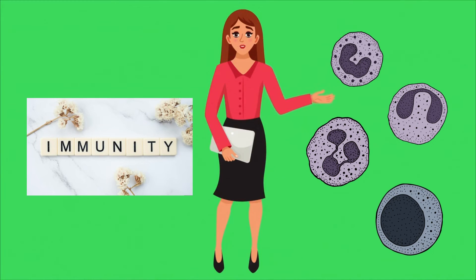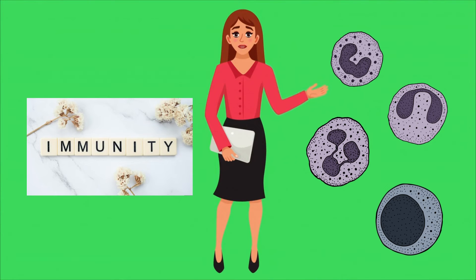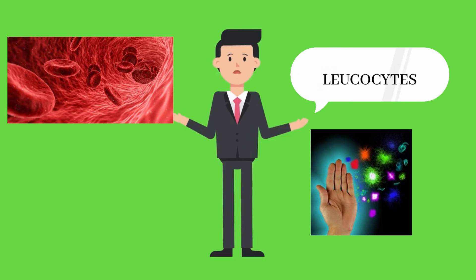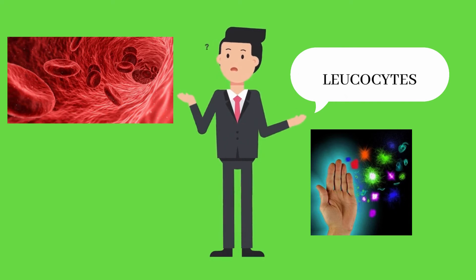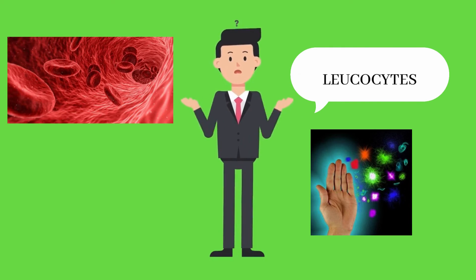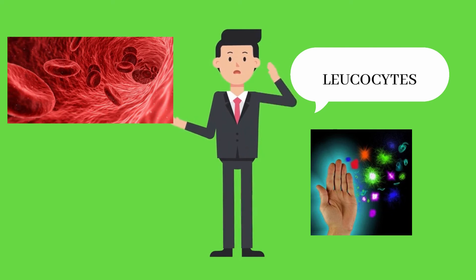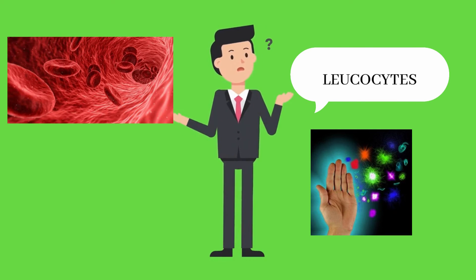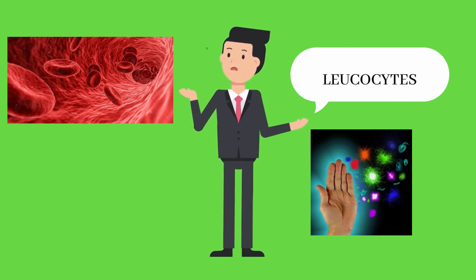Lymphocytes help to provide immunity against disease. Leukocytes, that is white blood cells, protect the body against foreign invaders and use the circulatory system to travel to the site of invasion.